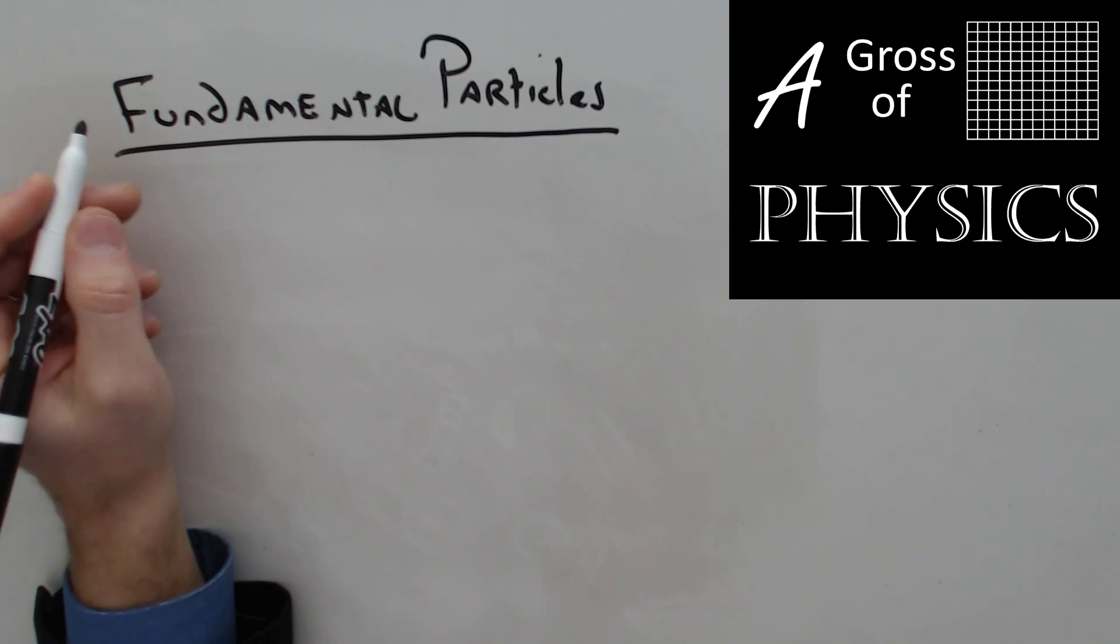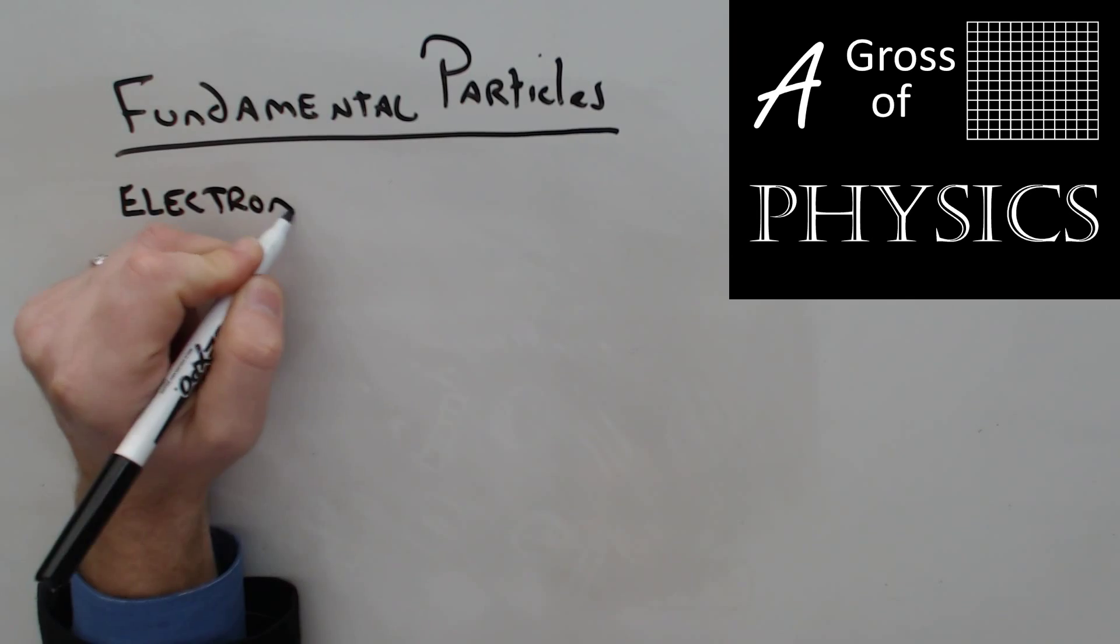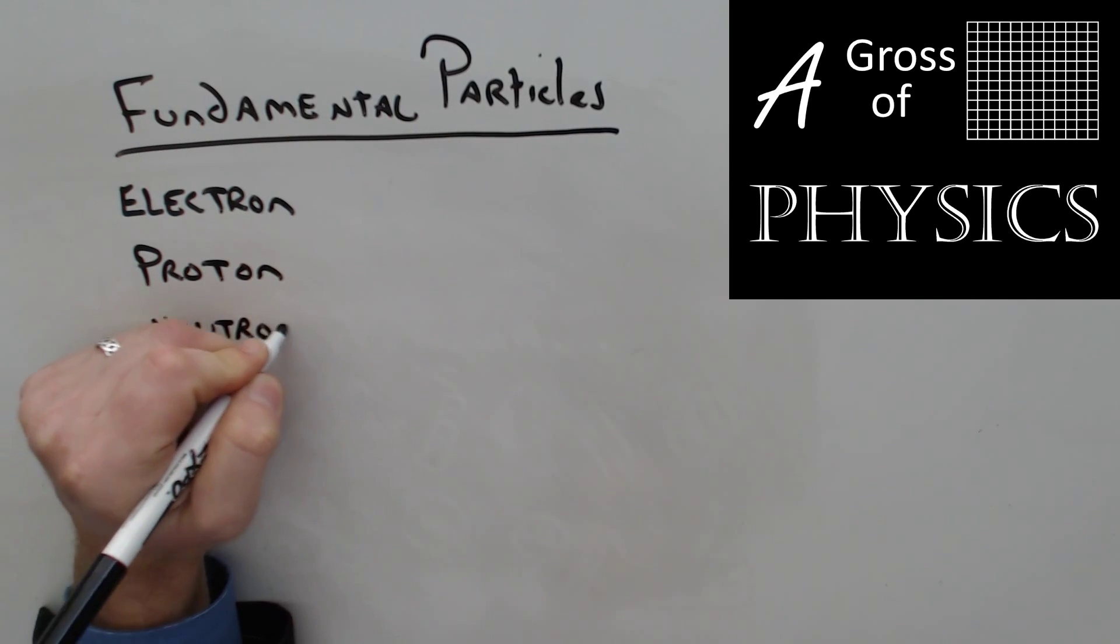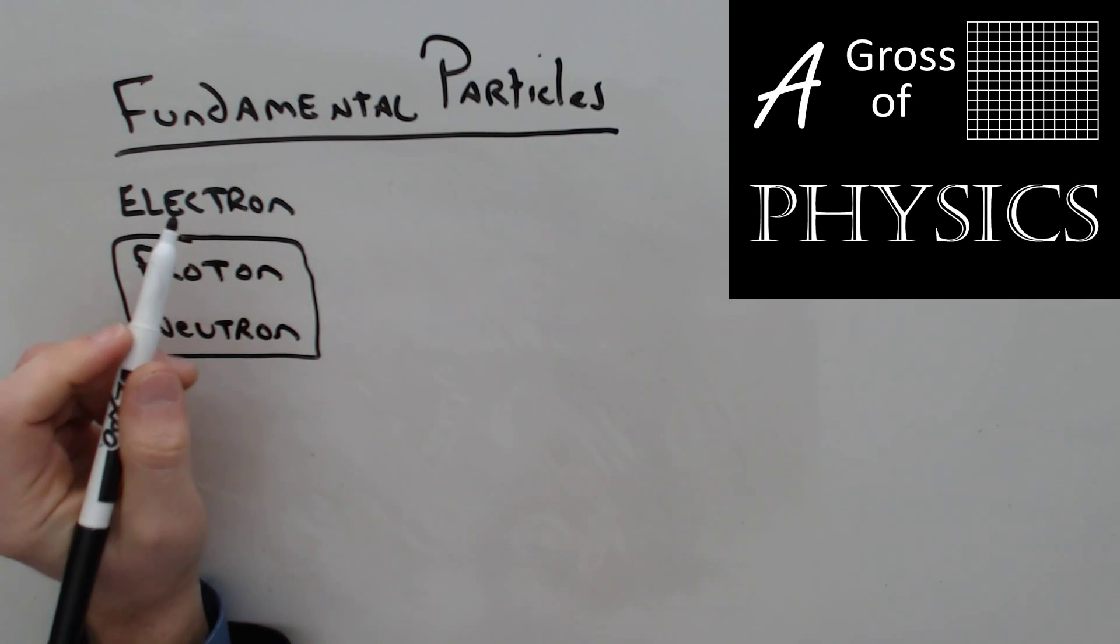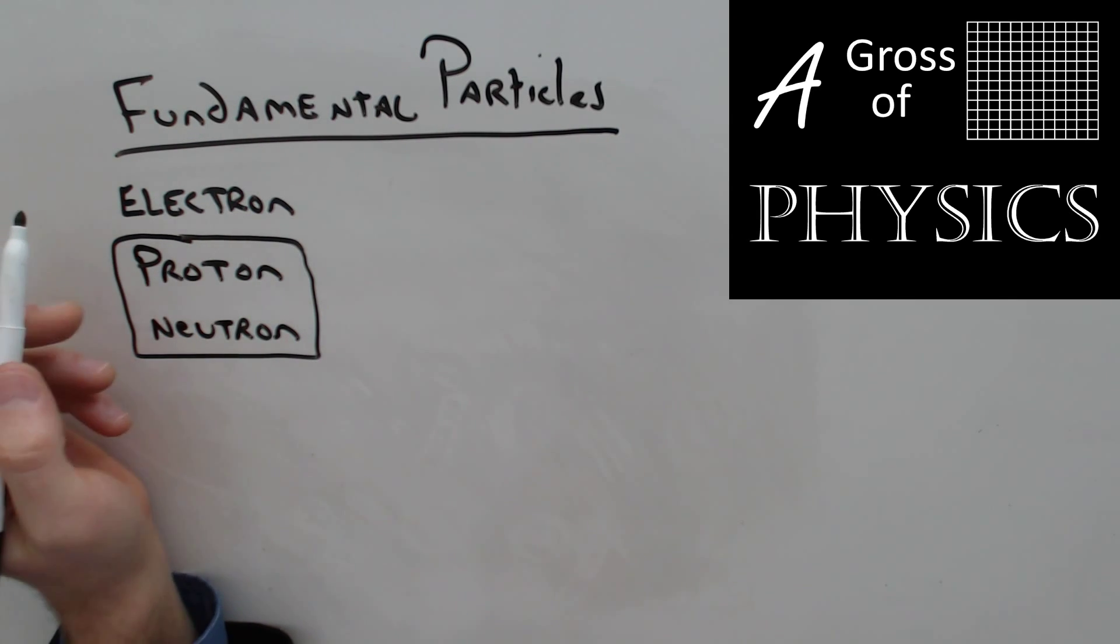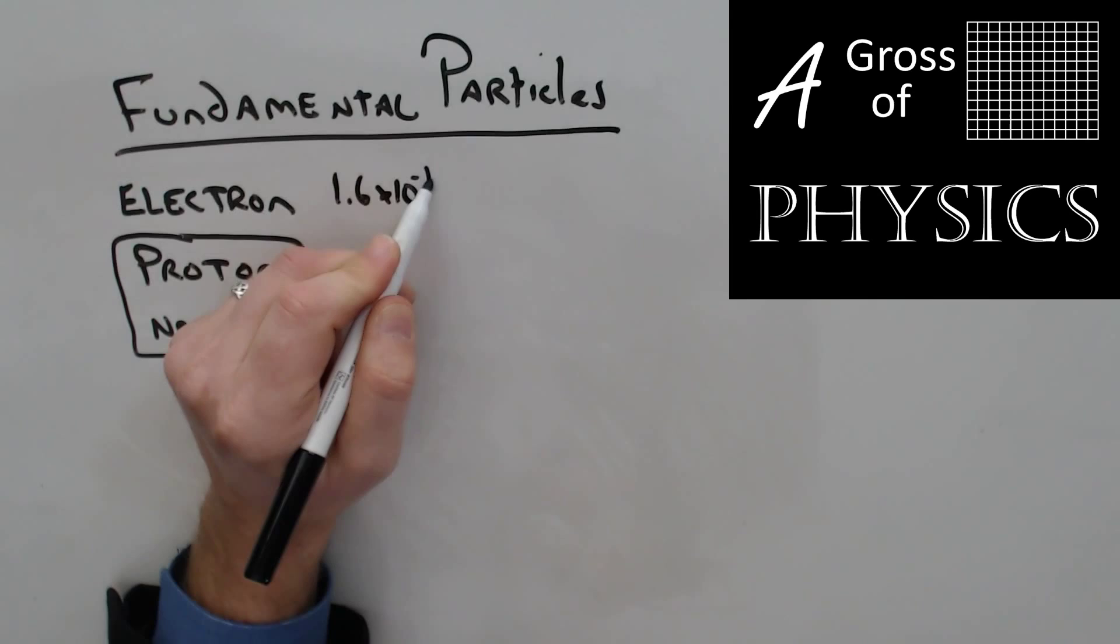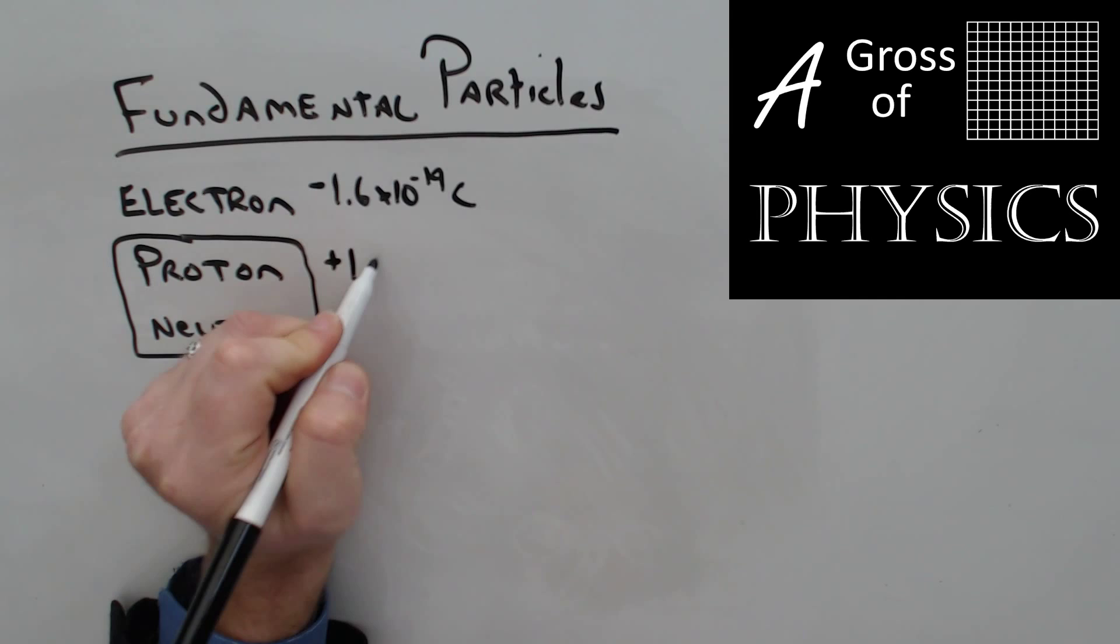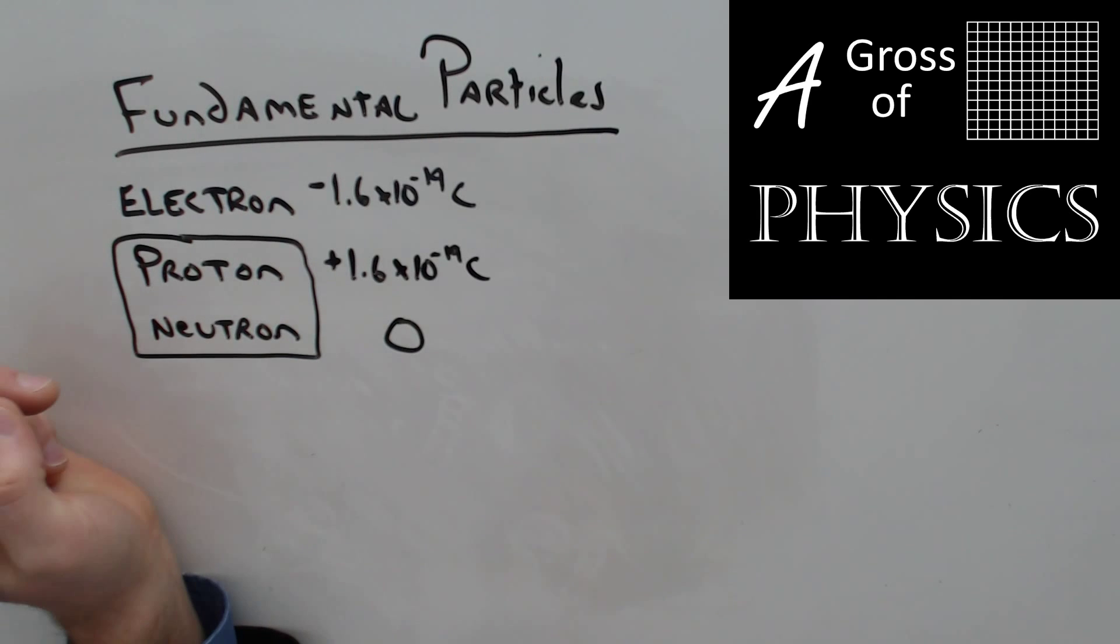All right. We have the fundamental particles, which we discussed before, the electron, the proton, and the neutron. The proton and the neutron exist within the nucleus and the electron is outside the nucleus. The charge on the electron is negative 1.6 times 10 to the negative 19 coulombs. The proton has a charge of positive 1.6 times 10 to the negative 19 coulombs. And the neutron, obviously because it's neutral, has zero charge.